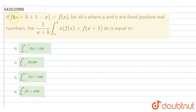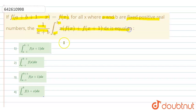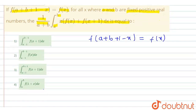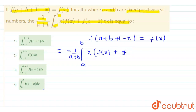Hello. Here it is given that f(a + b + 1 - x) is equal to f(x) for all x, where a and b are fixed positive real numbers. We need to find the value of: I = 1/(a+b) · ∫[a to b] x·f(x) + f(x+1) dx.